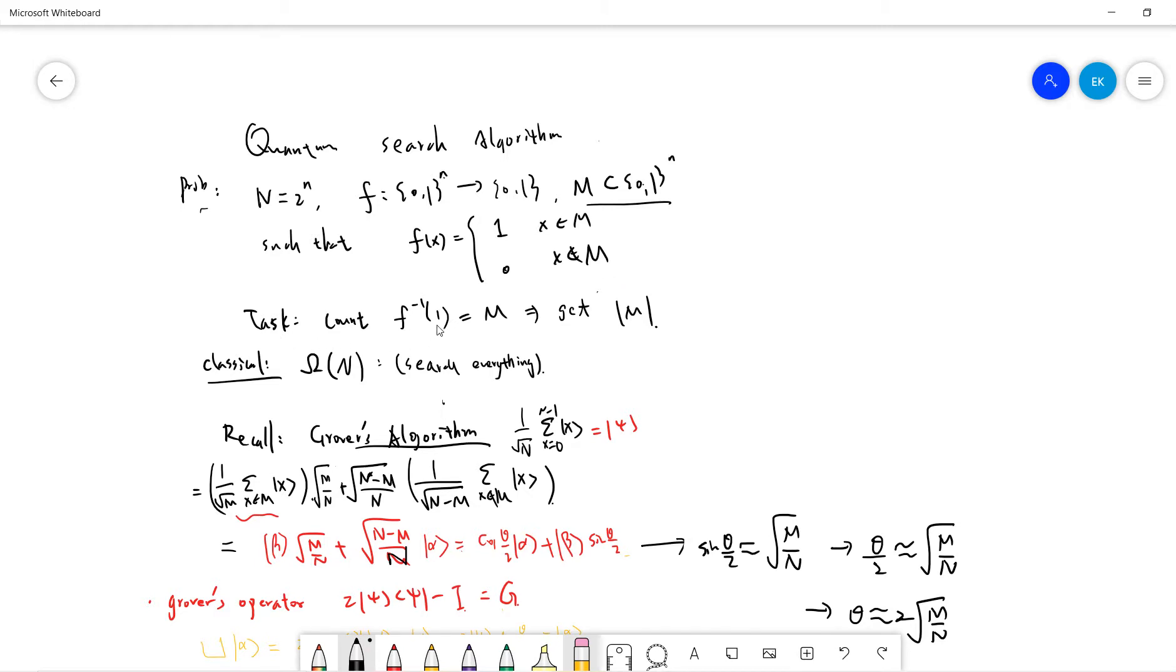Task is to count f^(-1)(1), basically M. The problem is that we need to know the number of M. So idea is that we do not want to know which M is, or which element belongs to M or not. The only thing we hope to know is the number of M.